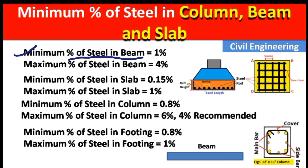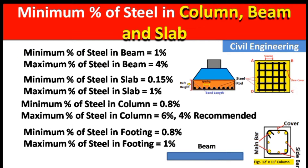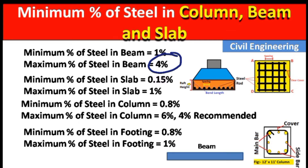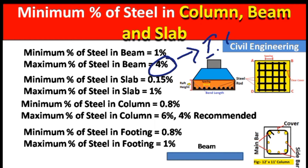First, the minimum percentage of steel in a beam: in a horizontal member like a beam, we have to provide a minimum of one percent and a maximum of four percent of steel. This maximum of four percent is recommended by IS code.